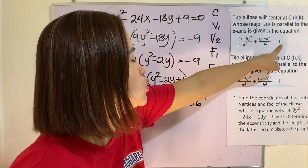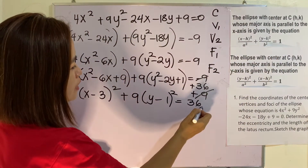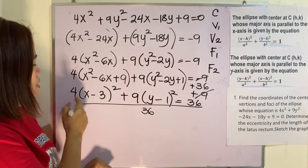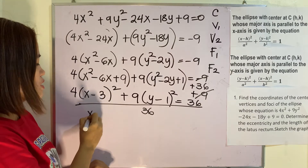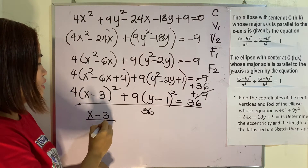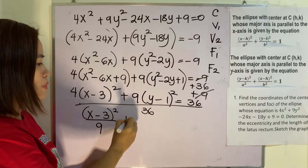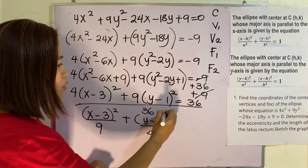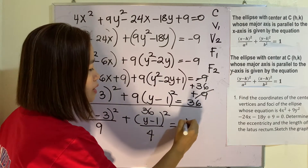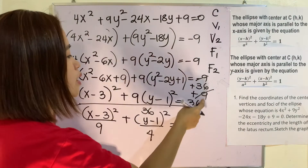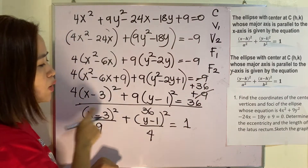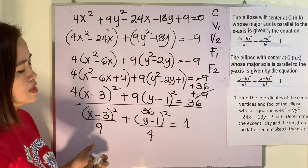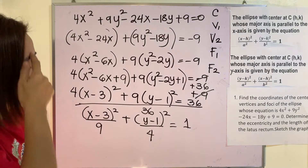Remember that this must equal 1, so therefore you need to divide everything by 36 — all terms must be divided by 36. This gives us (x minus 3) squared over 9 plus (y minus 1) squared over 4 equals 1. Whatever the number on the right-hand side, you divide the whole equation by that number. If it's 36, divide everything by 36; if it is 9, divide everything by 9.